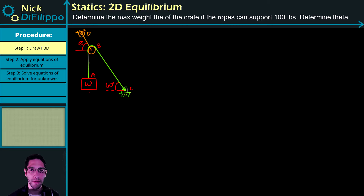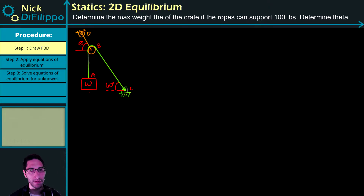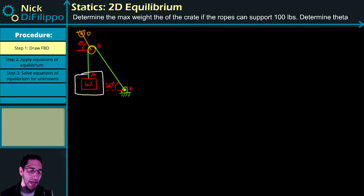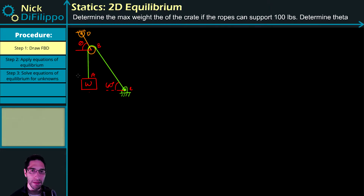In this video, I would like to perform another example of a statics 2D equilibrium problem. The example I'm going to do is another typical type of question you may see when dealing with 2D equilibrium. In this particular problem, we're asked to figure out the maximum weight W. All the ropes in this problem have a maximum force they can withstand — in this case, 100 pounds. So if any of the forces in the ropes are over 100 pounds, the rope would break.